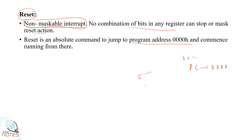You can control interrupts using the IE register for enabling and masking, and the IP register for setting priorities. In these five interrupts, three are internally generated: TF0, TF1, and the serial port interrupt RI/TI. Two interrupts — INT0 and INT1 — are externally generated via the INT pins. You can use TF0, TF1, RI, and TI to further understand the interrupt structure of the 8051.